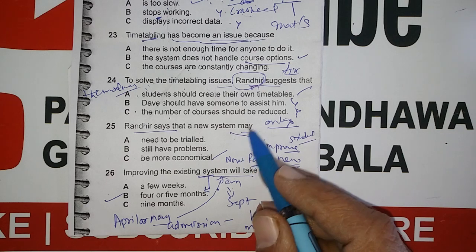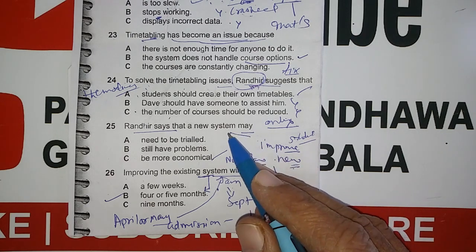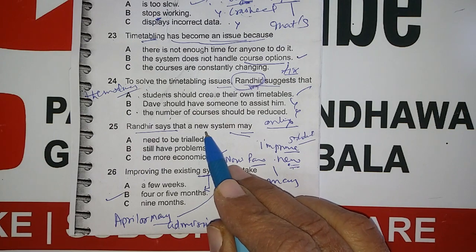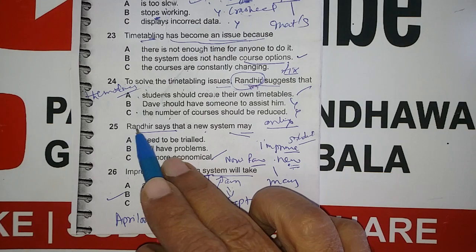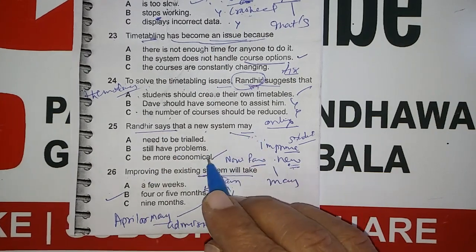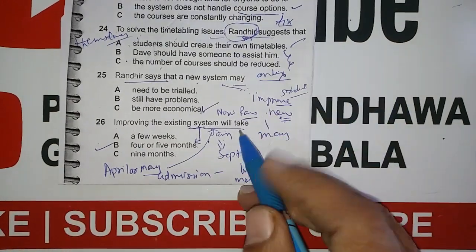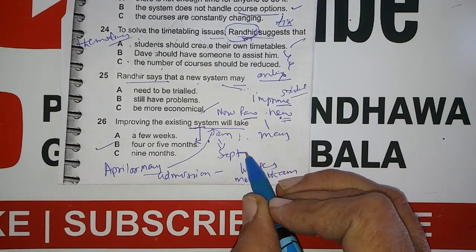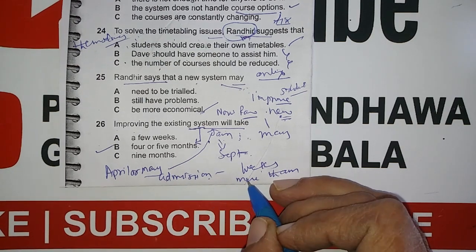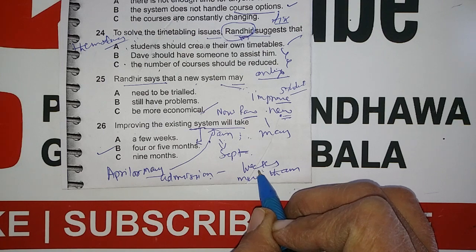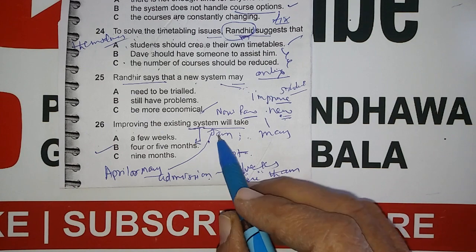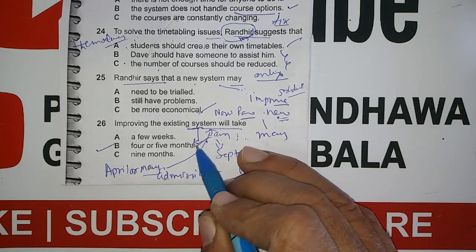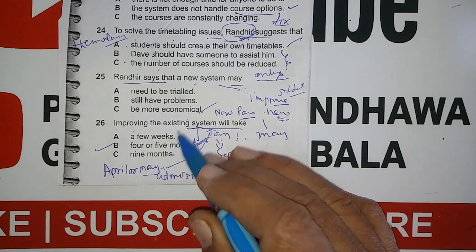That sounds great. We'll need to decide whether to improve the existing system or build a completely new one. I'd much prefer a new system — I've had enough of the old one. Okay, that'll probably take longer, although it may save money in the long run. It's January now and the new intake is in September — we need to start processing admissions in the next few weeks. As an initial estimate, improving the existing system would take until April or May, but a new system would take at least nine months — October at the earliest.